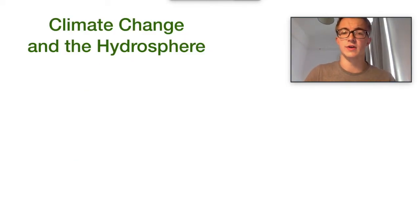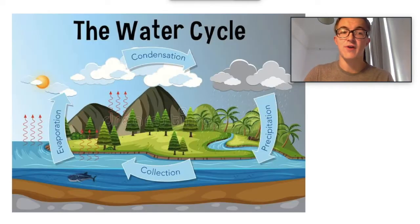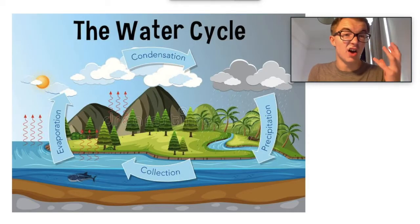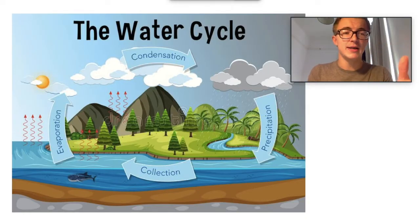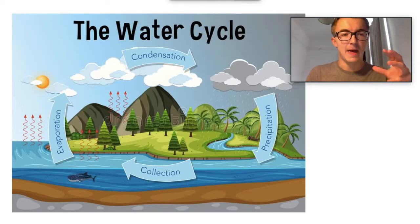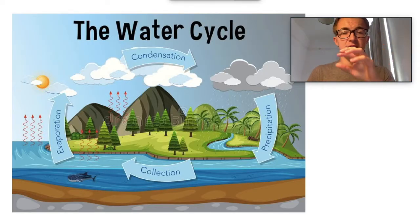Let's talk about the hydrosphere first. This is a very basic water cycle, but it's what you need to understand in terms of the movement of water on Earth. Precipitation is collected in water basins like the sea, lakes, and rivers. Then evaporation takes place, water is stored in clouds, and condensation leads to precipitation again — so there is a cycle there.